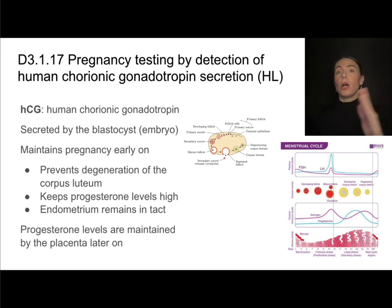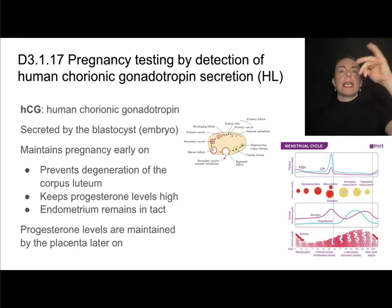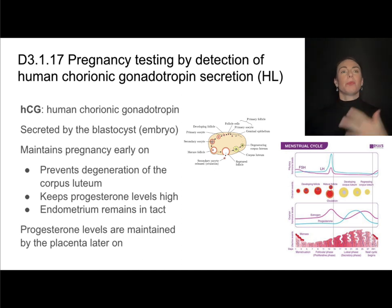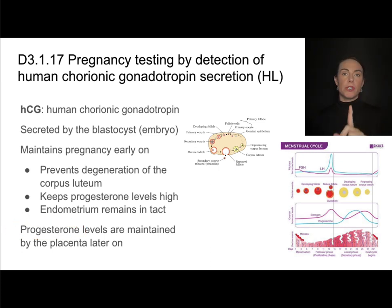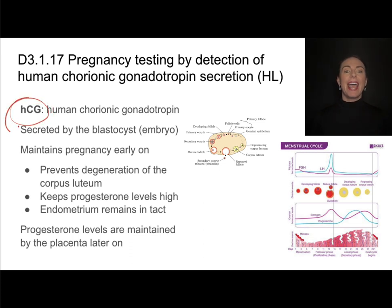Later in pregnancy, HCG levels drop because the placenta will be well developed enough to produce its own progesterone. But early in pregnancy, progesterone levels are maintained through the interaction between HCG and the corpus luteum.